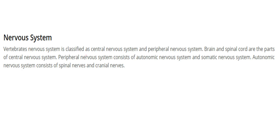In all vertebrates, the nervous system is classified as the central nervous system and the peripheral nervous system. The brain and spinal cord are part of the central nervous system. The peripheral nervous system consists of the autonomic nervous system and the somatic nervous system. The autonomic nervous system consists of spinal nerves and cranial nerves.